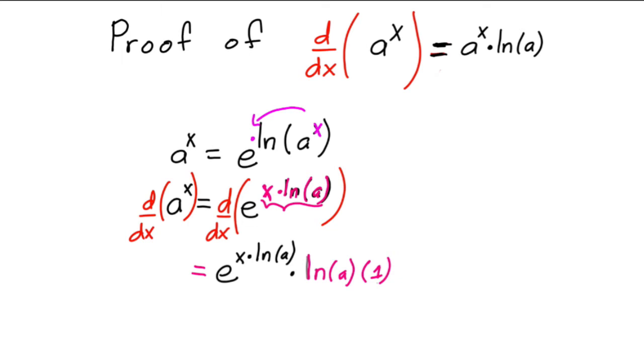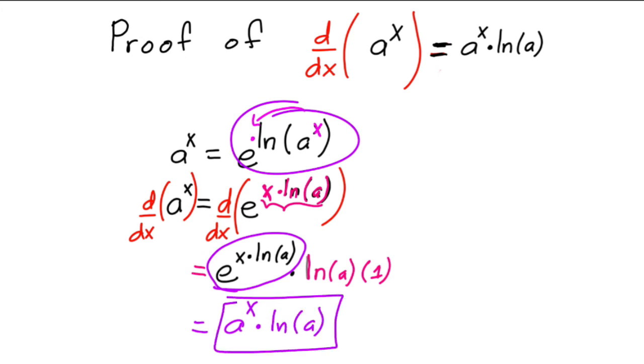Now, this is our original expression, e to the x times natural log of a, that's just the same as a to the x. So this is equal to a to the x times natural log of a. See, I told you to trust me, that's what it is.